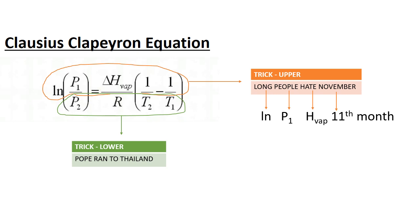Just imagine the Pope running to Thailand and long people hating November. In this new trick, 'Pope' starts with the letter P, so we can use it to remember P2. The word 'ran' we can use to remember the constant value R.